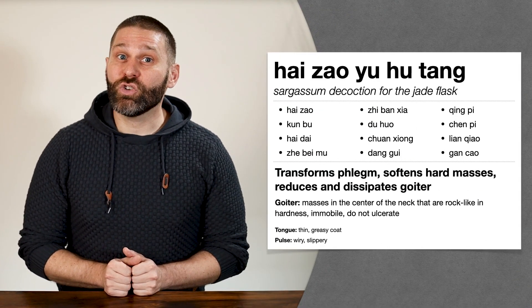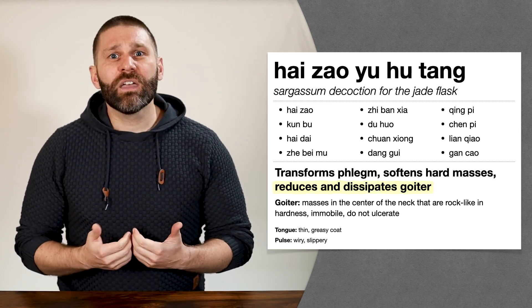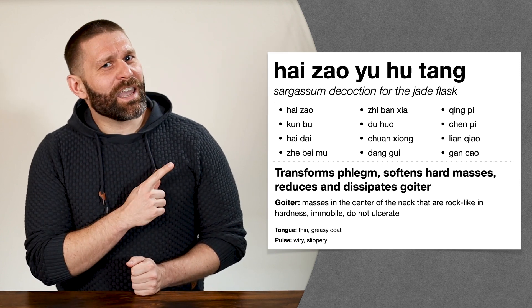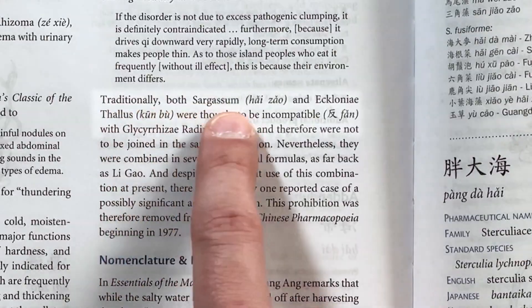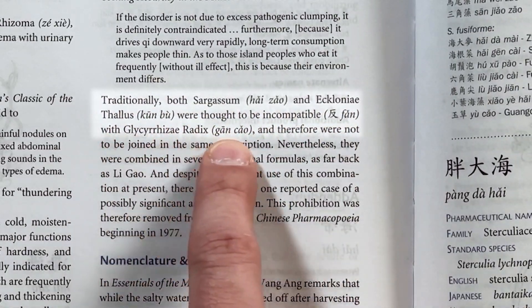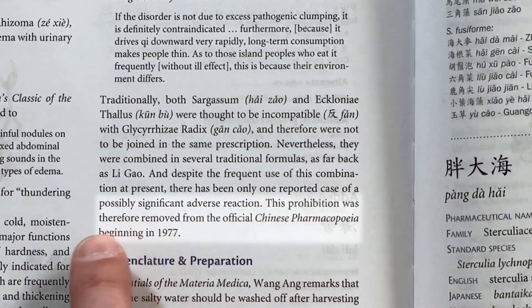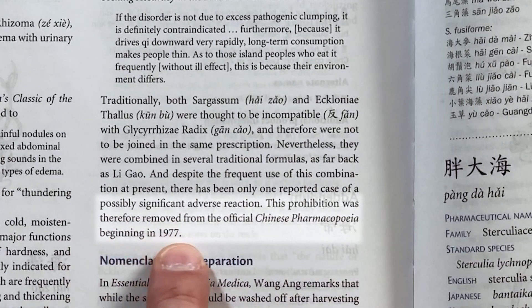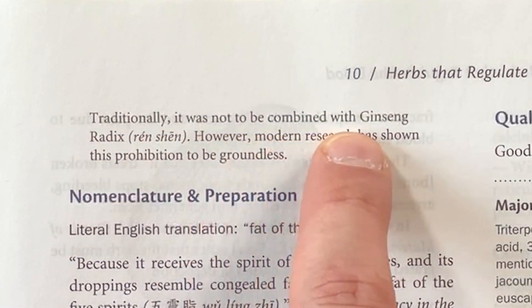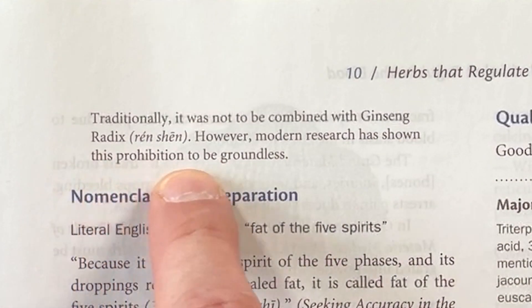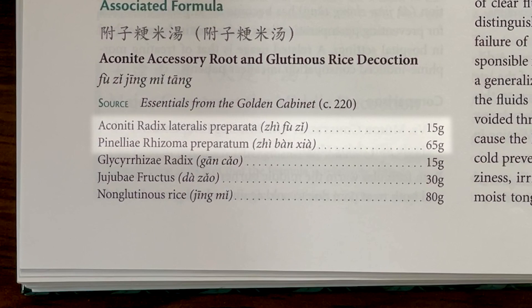Really, many of these contraindications are not actually followed anymore — or classically, they never really were. One example is the formula Heitzau Yuhutang, used to treat nodules like goiter. This formula was created in the 1600s and contains both Heitzau and Gansau, even though these are traditionally incompatible. Bensky notes that traditionally both Heitzau and Khumbu were thought to be incompatible with Gansau, but they were combined in several traditional formulas, and this prohibition was removed from the official Chinese pharmacopoeia in 1977 because no real adverse effects were reported. Similarly, with Oolengjir, modern research has shown the prohibition against combining it with ginseng radix to be groundless. We even see combinations of Fuzza and Banxia going as far back as the Jingwei Yaluwei in formulas created by Zhongzhongjing.